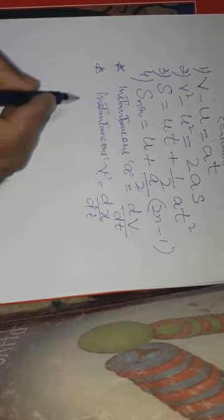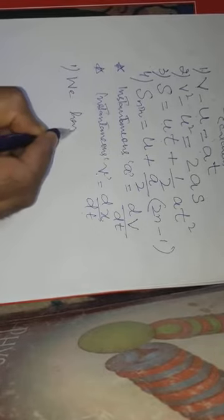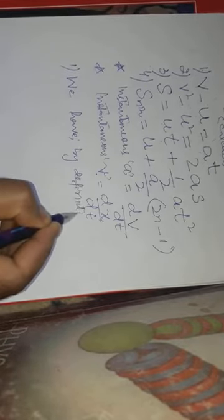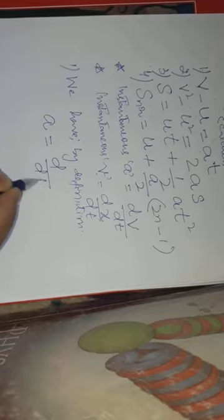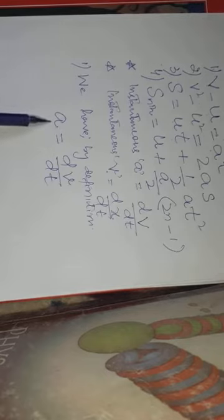We will derive equation number 1. By definition, acceleration A is equal to dv by dt, so this is the instantaneous acceleration. We can write dv is equal to a dt. To get the equation V minus U equals AT, we will integrate this equation. Integrating, we get integration of dv, with the velocity changing from initial velocity U to final velocity V as the limits.